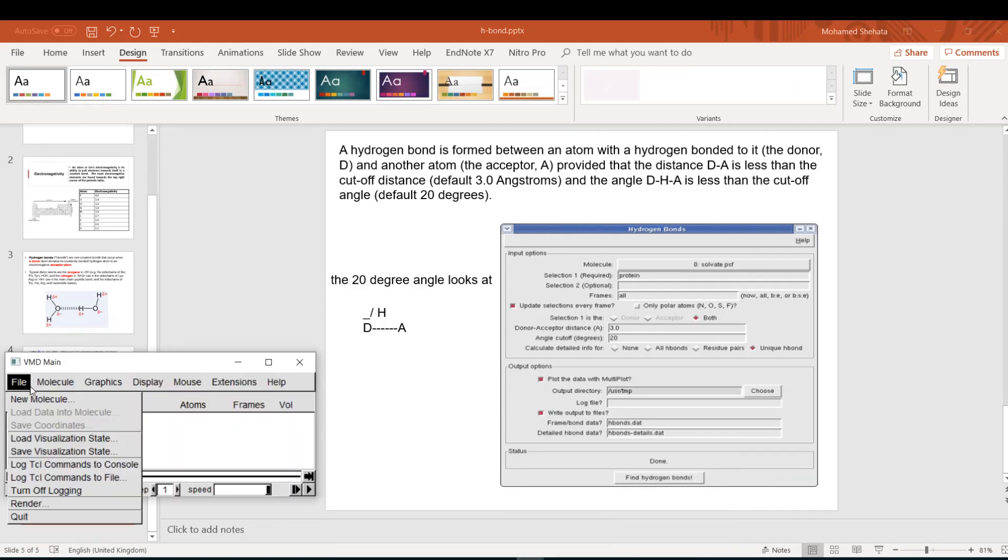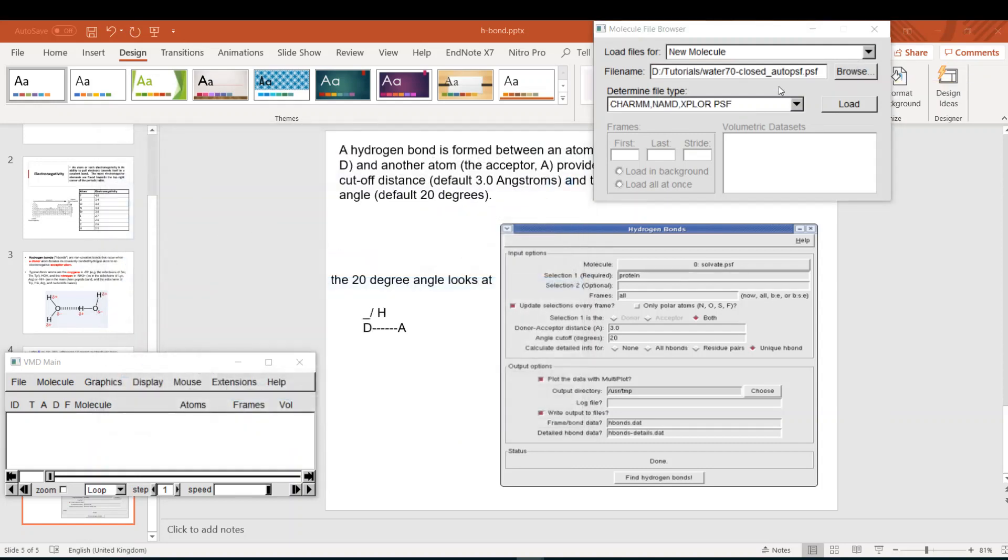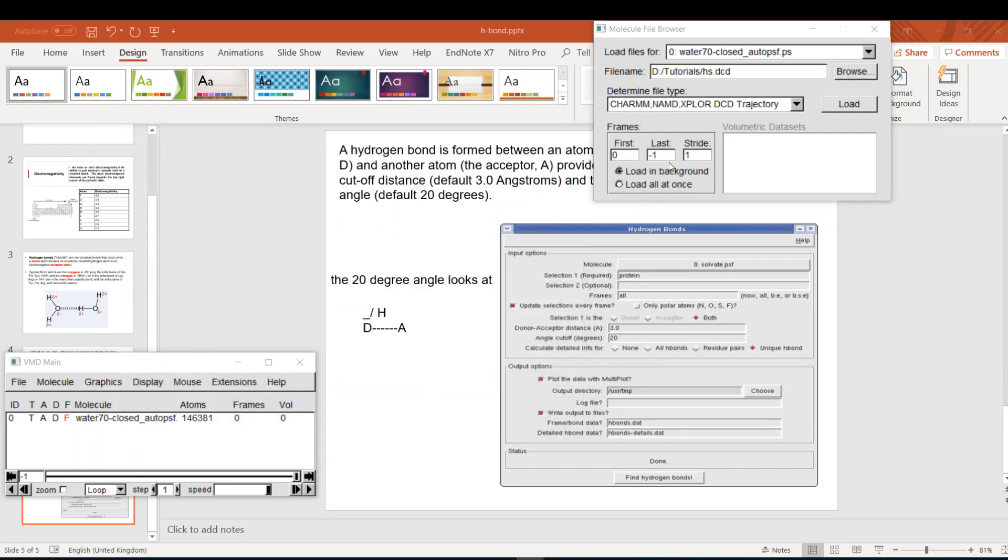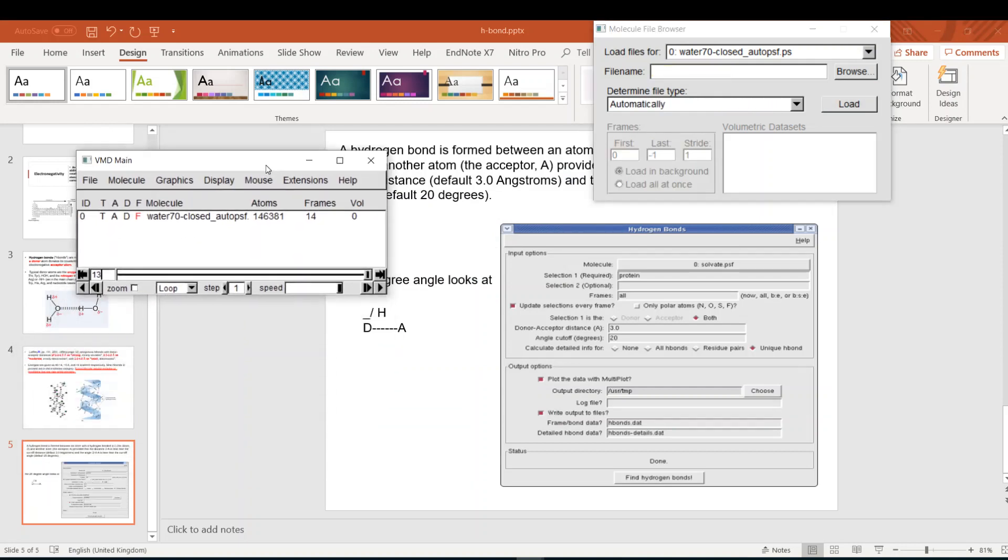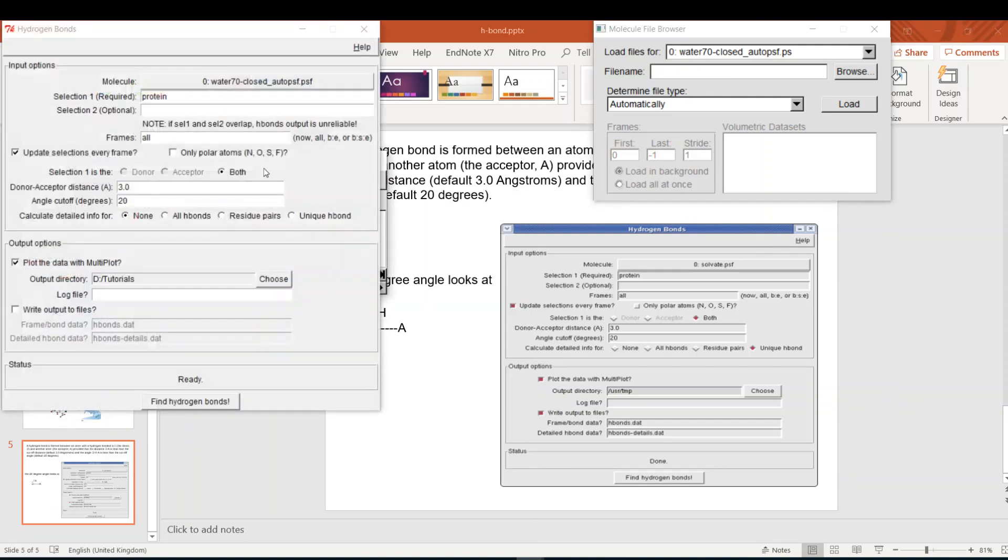Let me get out of this presentation and go to VMD. I will have my PSF file, and my short trajectory. It's about 14 frames. To open the plugin you should go to Extensions, Analysis, and Hydrogen Bonds. Here's my molecule because it's already loaded into VMD. And here protein. And here all the frames because it's very short.